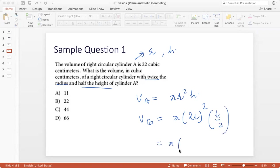So that becomes pi, 2R whole squared is 4R squared into H by 2. This 2 cancels with 4 to give 2. So I get 2 pi R squared H. So if my volume of A was pi R squared H, the volume of B is twice of that. Since the volume of A is 22, the volume of B, the volume of the new cylinder would be 44 option C.